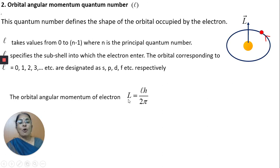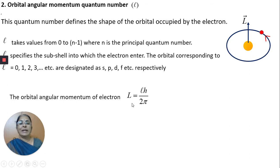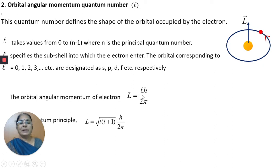This L is the orbital angular momentum quantum number. The Bohr model suggested L = n·h/2π, but due to orbital motion, the formula is modified to L·(h/2π). According to quantum mechanics, this L should be replaced by √(L(L+1)), so the angular momentum becomes √(L(L+1))·(h/2π).